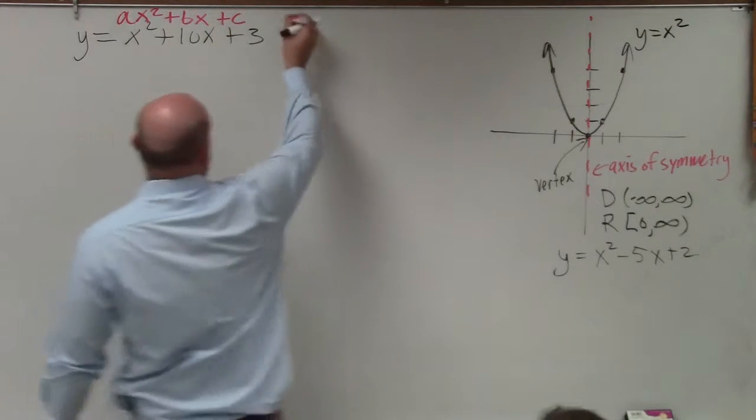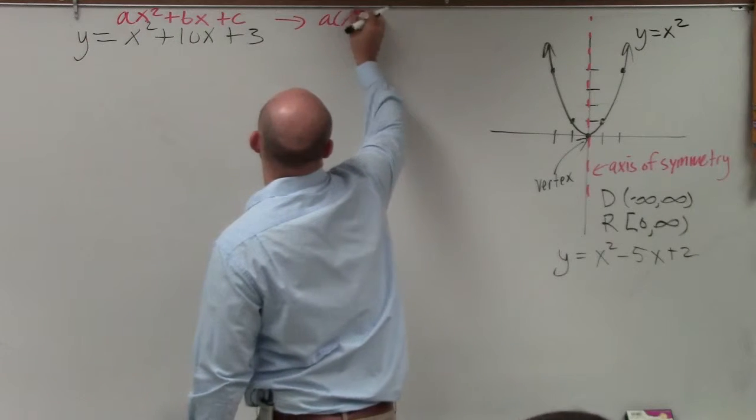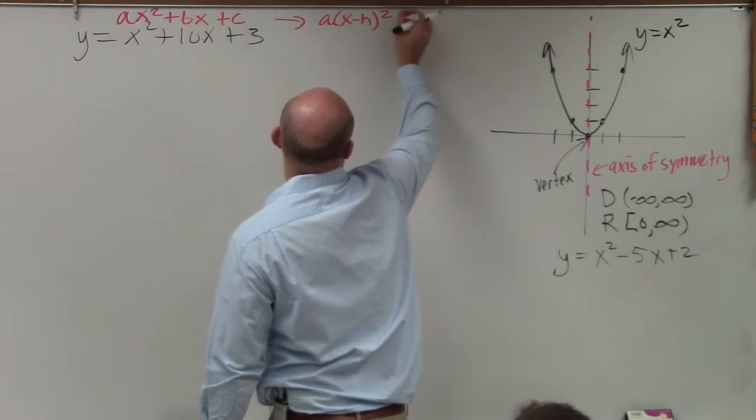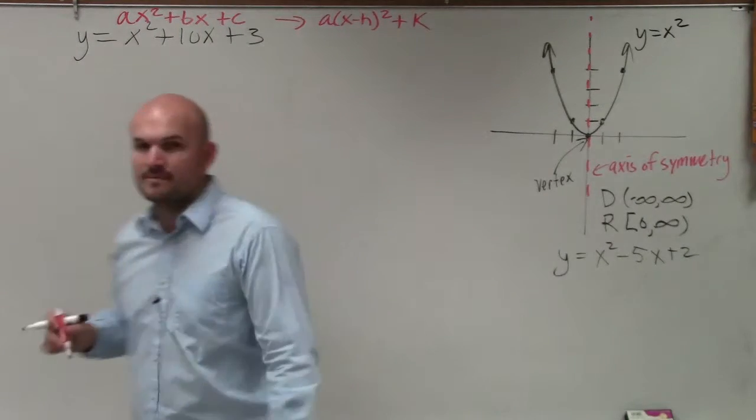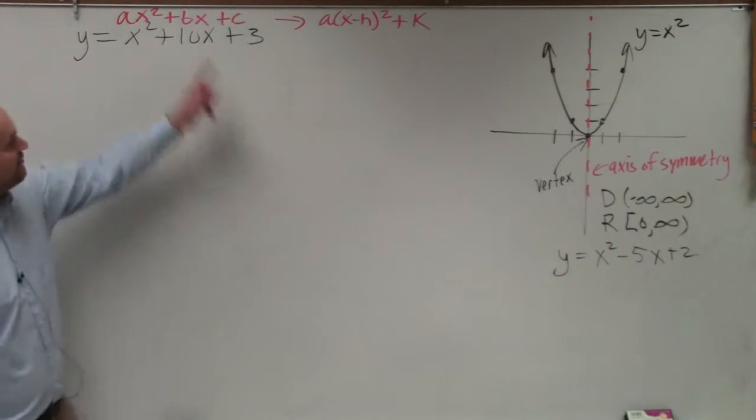Well, guess what? We want to convert this over to a times x minus h plus k. We need to convert it from this to this.